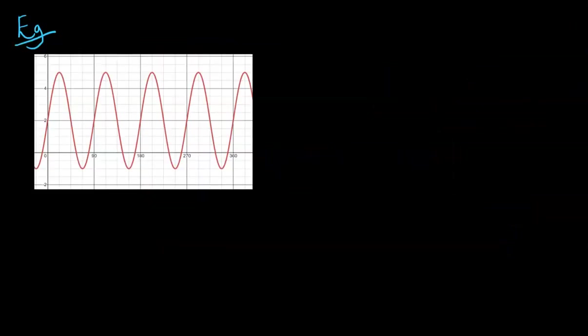So let's see this with an example. So let's start off by working out A. Now A was the maximum minus the minimum divided by 2. Now our maximum on this graph here is at 5, the minimum is at minus 1. So this will be 5 take away minus 1, which is 6, divided by 2, so our amplitude is 3.